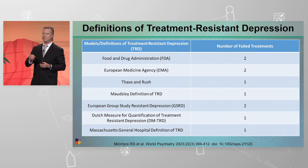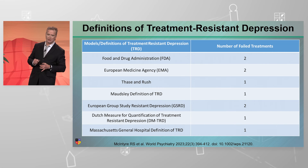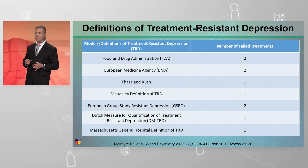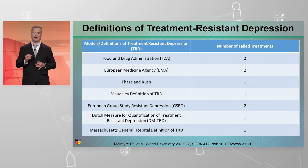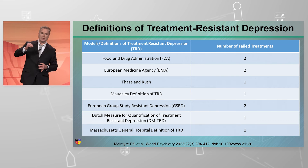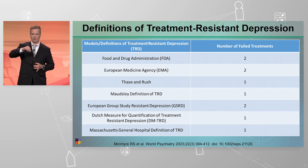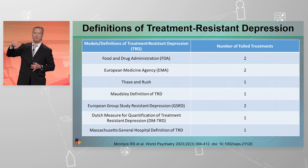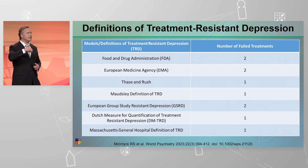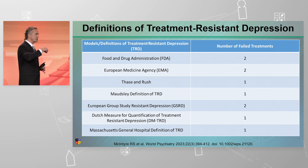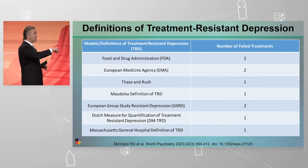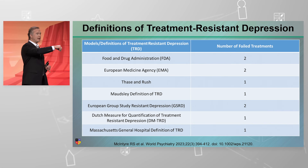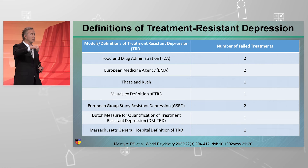What do I mean about predictive utility? The gentleman I described — a real patient, real situation — is a great example. He was told he had TRD. That seems pretty doom and gloom to me, very defeatist and very discouraging — not just to him, but to his family and I think the entire circle of care.